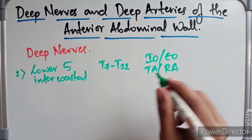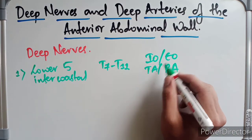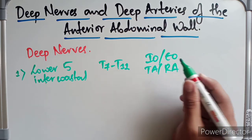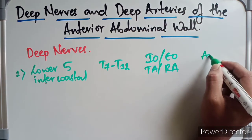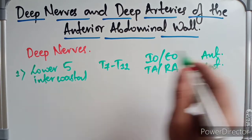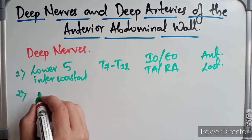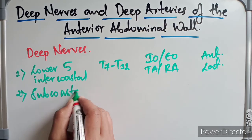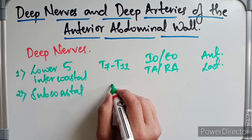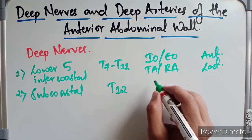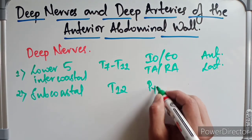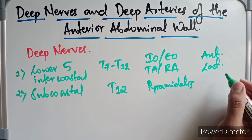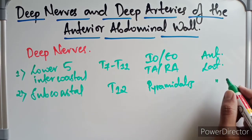The motor branches of these nerves supply the internal oblique, external oblique, transversus abdominis, and the rectus abdominis, and they have cutaneous branches to the anterior and lateral side of the abdomen. The second deep nerve is the subcostal nerve, with a root value of T12. It has a motor branch to the pyramidalis muscle and cutaneous branches to the anterior and lateral side.